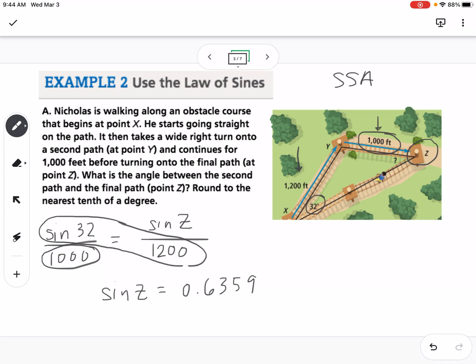So what we want to do to find angle Z is we're going to take the inverse sine of 0.6359. An easier way to make sure you don't round until the very end is to just take the inverse sine of 1,200 sine of 32 over 1,000. So just take that value that you're going to calculate anyway and put it into Desmos or put it into your calculator so that way you're not rounding along the way and missing the final answer. So angle Z turns out to be 39.5 degrees.